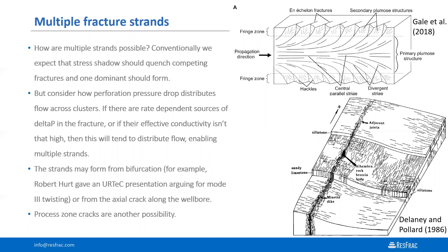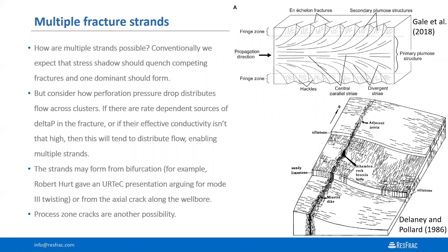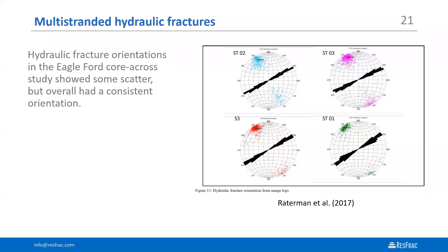What explains multiple hydraulic fracture strands? I think that's a research question. Some theories: it could be a process zone that forms ahead of the crack tip; it could be the twisting of fractures at the top and bottom from mode-three twisting — there's a nice presentation from Robert Heard on that. The diagram showing fracture orientations from the Raterman core-through study shows that while there are a lot of fractures, they're all very consistently oriented — not in a zigzagging maze-like pathway. The Wolfcamp core-through study shows a little more spread in fracture orientations, but still pretty consistent — all fractures going in the same direction. This is also broadly supported by microseismic, where they're seeing mostly linear features.